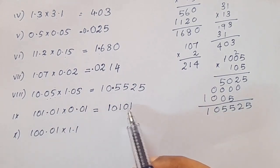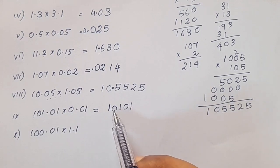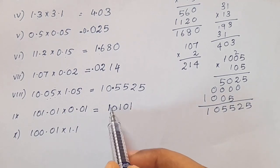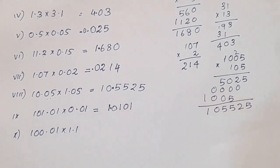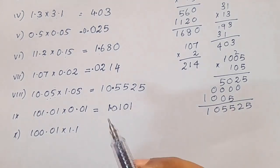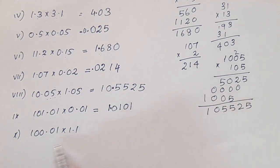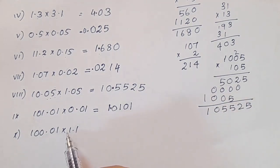Now we count four places from the right in our result. The decimal point is placed here.